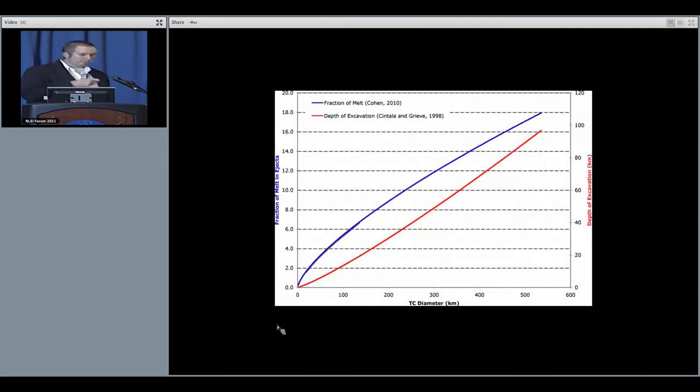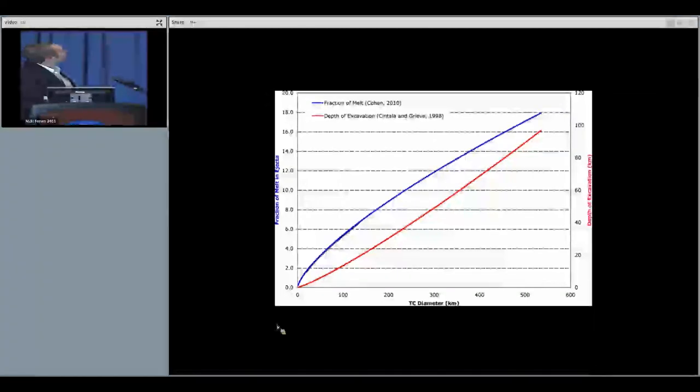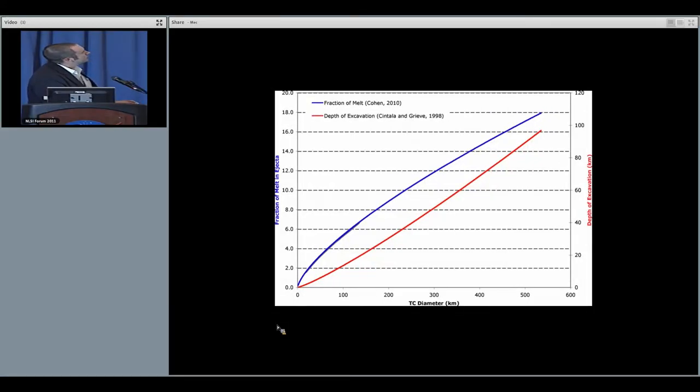Looking at a plot comparing two different parameters, one being the fraction of melt in ejecta, that F melt parameter that was described by Barb in an abstract a couple years ago, and comparing that to the depth of excavation of material, so the maximum depth of material that's excavated in ejecta. You can see that for very small craters, smaller than with a transient cavity diameter smaller than 100 kilometers, you're going to be excavating a very small amount of new melt material, less than about 6%. At the same time, that material is going to be derived from the upper 20, 30 kilometers of the crust.